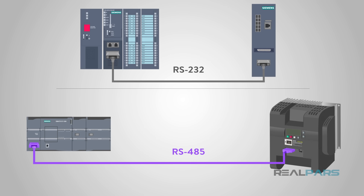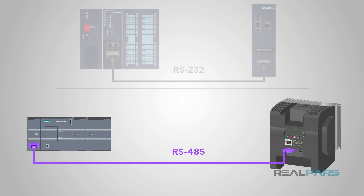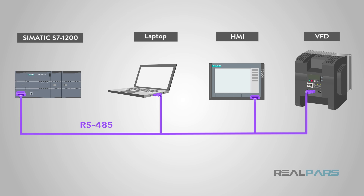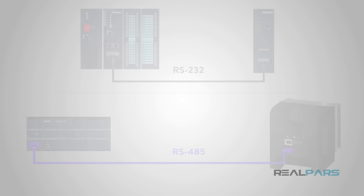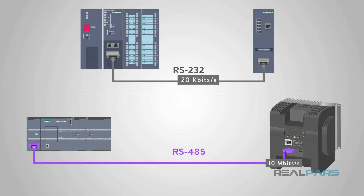Just like its older brother RS-232, RS-485 is a form of serial communication. Think of RS-485 as the younger, faster brother of RS-232. What made it such an advancement over RS-232 was the fact that it could transmit not only a single device-to-device transmission, but also a communications bus to connect multiple devices at once. The configuration and specifications of RS-485 make it faster and extend the range of data transmission.